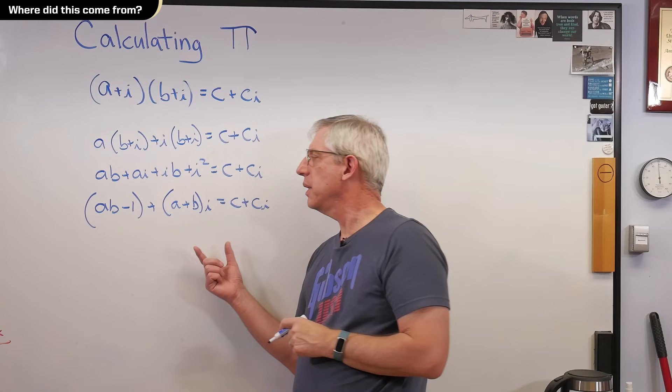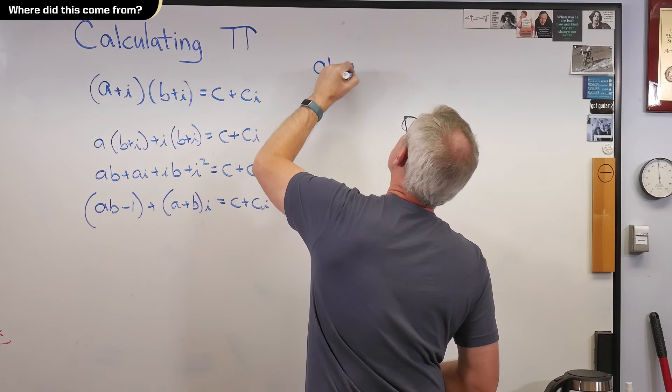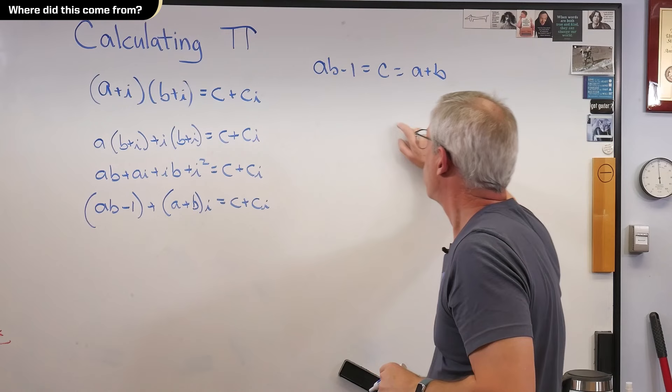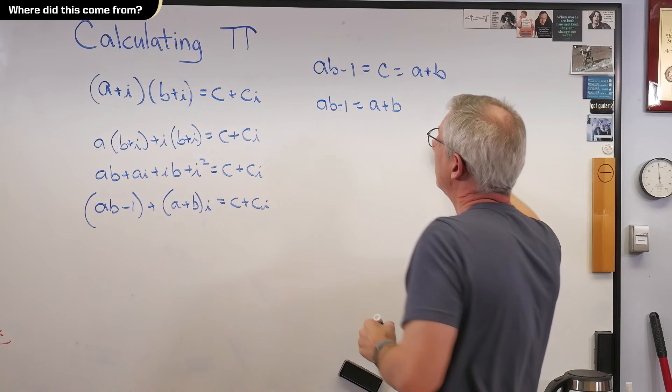Because these are complex numbers, that imaginary here, imaginary here has to equal imaginary there. Real here has to equal real there. And the real and imaginary part are both equal to c. So, let's say, ab minus 1 equals c. That's a plus b. Well, if this and this are both equal to c, they've got to be equal to each other, aren't they? So, ab minus 1 has to equal a plus b. Okay, we're getting there.